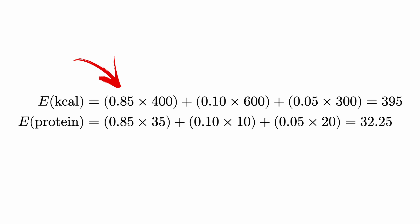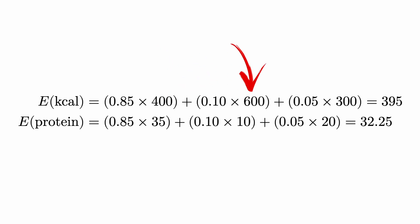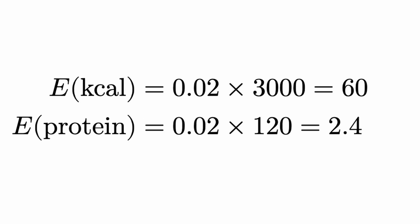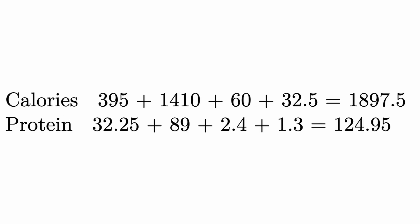You could try to solve it mathematically. For example, you can compute expected values. For breakfast, if 85% of the time you drink a smoothie, 10% waffles, and 5% eggs, the expected calories equals the probability of smoothie times its calories, plus probability of waffles times its calories, plus probability of eggs times its calories — which works out to 395 calories. You could do the same for protein, lunch, and dinner, and summing all those up gives you the expected calories and protein. On average I'm under my calorie limit, but also under my protein goal.